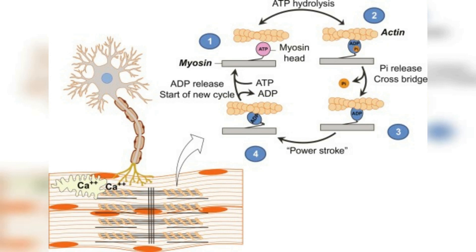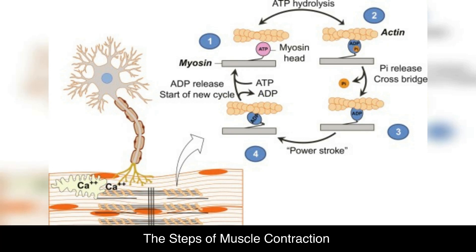When calcium ions are released into the muscle cell, they bind to troponin, causing tropomyosin to move aside and expose the binding site on actin for myosin. Understanding the role of each component in muscle contraction is important in comprehending the complex physiology of movement.